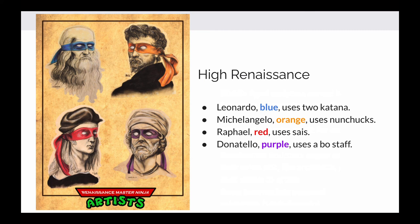Do you recognize these individuals? We've got Leonardo — he's in the blue mask and uses a katana if you're looking at the Ninja Turtles. Michelangelo is in the orange mask and uses nunchucks. Raphael is in red, and Donatello is in purple with a staff. If I showed you this picture without the masks, you'd just see them as the artists they are. Throw the masks on and you're like, 'Oh yeah, those are the Ninja Turtles.' You've seen them, you've heard of them — this is nothing new.